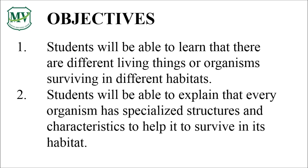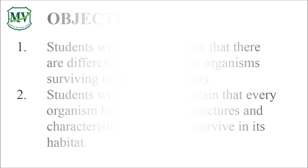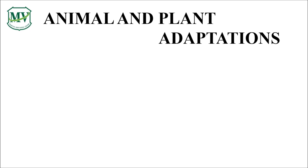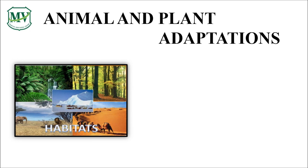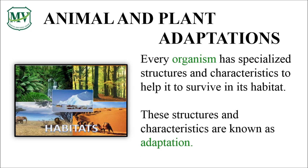In this lesson, you will learn that an organism lives in a specific habitat and has specific characteristics to make it survive in its habitat. We're going to learn how animals and plants adapt to their environment. Adaptations of animals and plants are important, as poorly adapted organisms may not survive and reproduce.